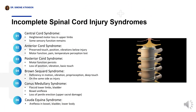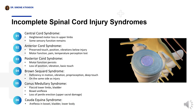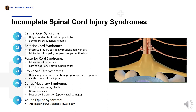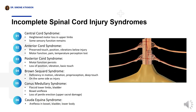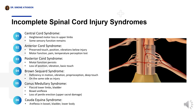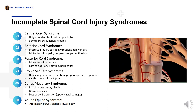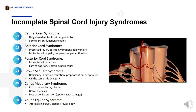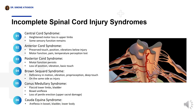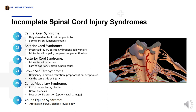There are six incomplete spinal cord injury syndromes. Central cord syndrome is characterized by a more pronounced loss of motor function in the upper extremities with varying patterns of intact sensation remaining. Anterior cord syndrome allows sensations of touch, position, and vibrations to remain intact below the level of the injury; however, motor function, pain, and temperature sensation are lost. In posterior cord injury, motor function remains intact but there is a loss of position, vibration, and crude touch sensations.